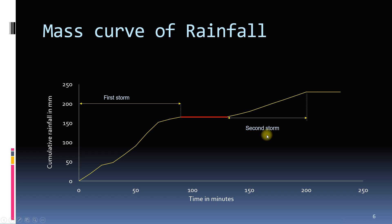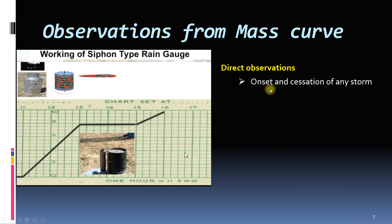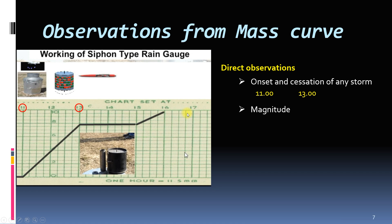Let us list all the observations we can get directly or indirectly from the mass curve. The first direct observation is the onset and cessation of any storm — onset means when the rain starts. If you see this curve, the rain starts at 11 am and continues until 1 pm. After 1 pm, it stops and starts again at 3 pm. This means for the first storm, the onset of rain is at 11 am and the cessation is at 1 pm. Also, we can observe the magnitude and duration of the storm. For the first storm, the magnitude is 8 mm and the duration is 2 hours.